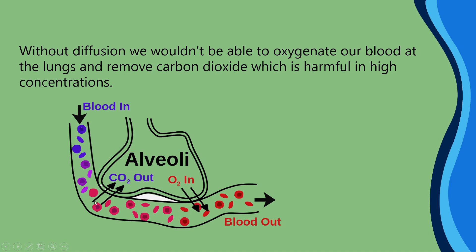We've also got carbon dioxide diffusing out of the blood. This is really important because carbon dioxide can form an acid in solution and can be really harmful in high concentrations. So we have to be adapted to facilitate the diffusion of carbon dioxide out of the blood into the alveoli so that it can be expelled via exhalation.